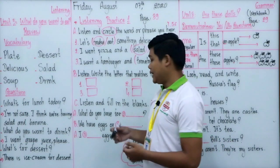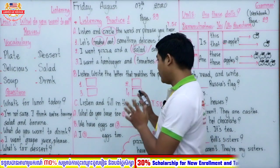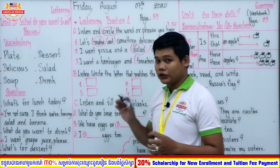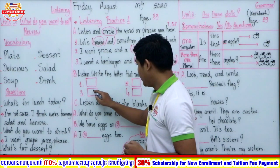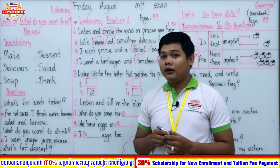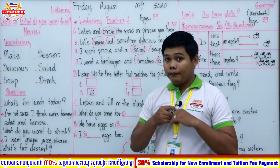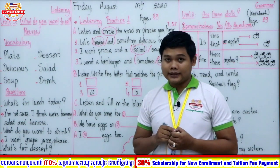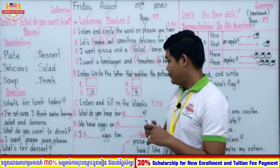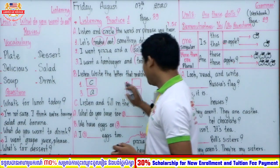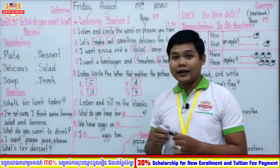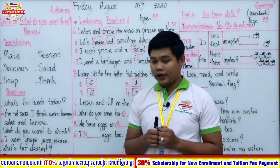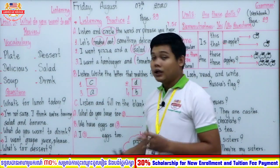Welcome back — let's check the correct answers together. Letter A matches picture number three. Letter B matches picture number four. Letter C matches picture number one. Letter D matches picture number two. Did you get the same answers? Excellent — you are clever! Now let's move to the last section.